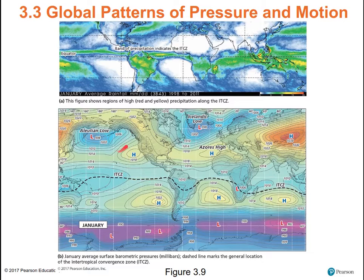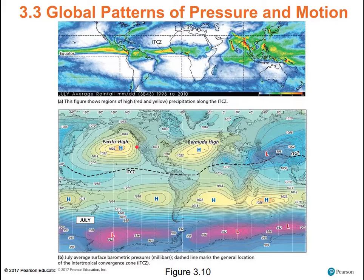In January in California, the Hawaiian high shifts south so air circulates around it. The Aleutian low gets bigger and also drops south, so air is rotating counterclockwise around the low and clockwise around the high. The storms that track in across the ocean come into California. In the summertime, in July, the Pacific high gets big and strong. The Aleutian low shifts north and gets really weak. The Bermuda high gets really big. Air rotating clockwise out of the Pacific high tends to block storms, routing them up into British Columbia.